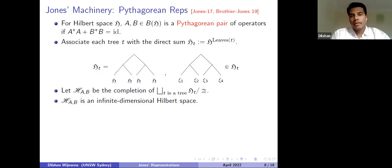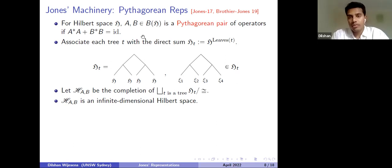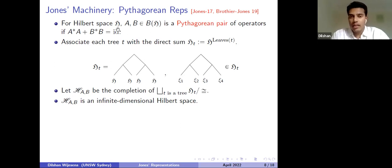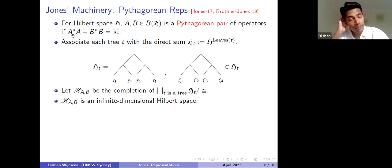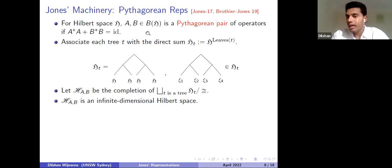I'll outline how to construct a particular type of Jones representation known as diagram representations, first written up in a paper by Brothier and Jones in 2019. The construction starts with an initial Hilbert space h and defines two bounded operators A and B acting on this Hilbert space which satisfy A*A + B*B = I, called the Pythagorean identity. If two operators satisfy this identity we call them a Pythagorean pair of operators.